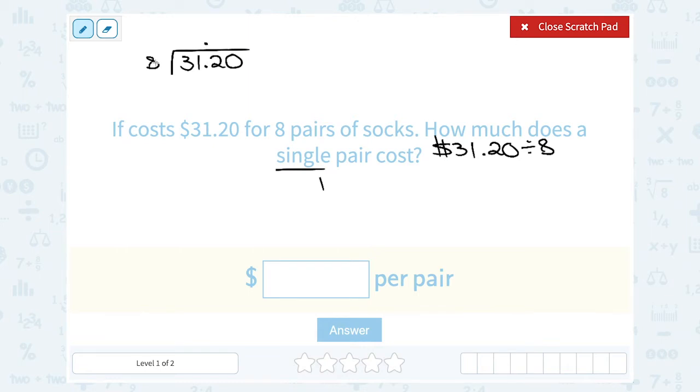I'm thinking to myself, how many times does eight go into 31? Let's think about this. Eight times four would be 32. So it's not going to quite go in four times.